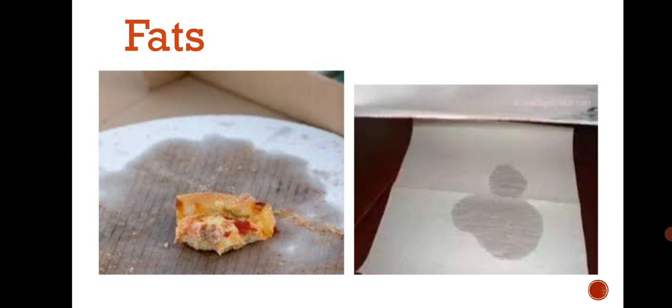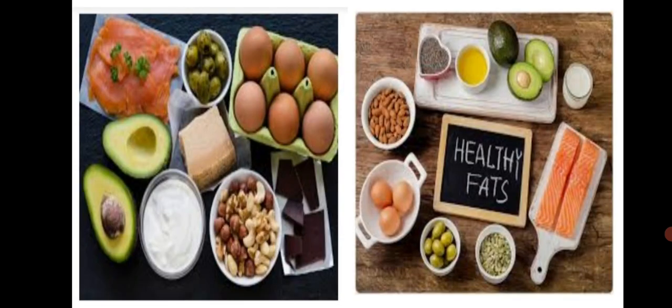Now, let's learn about fats. Oil is a fatty substance. Paper becomes translucent. Translucent means allowing light to pass through but not totally transparent. Paper becomes translucent as you see in the picture when a fatty substance is applied to it. Paper becoming translucent is a sign of the presence of fats in the foodstuff kept on it.